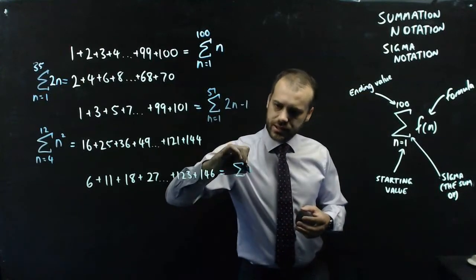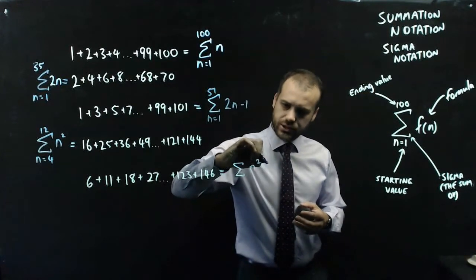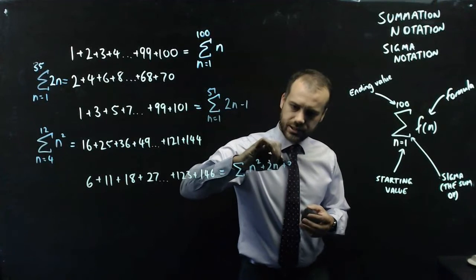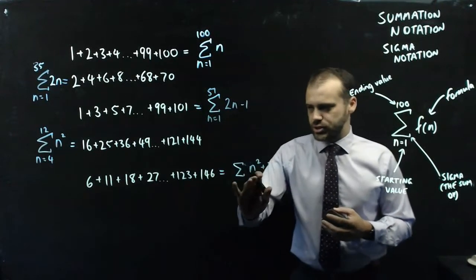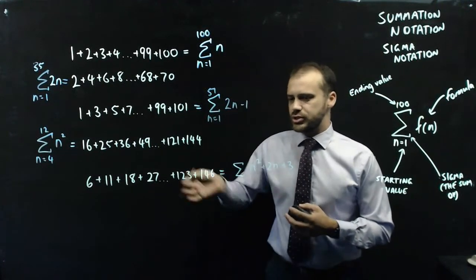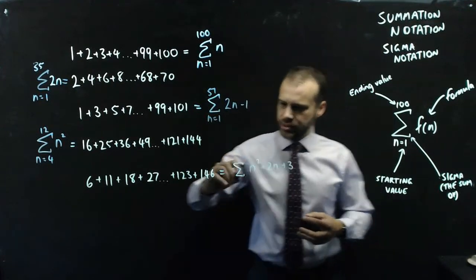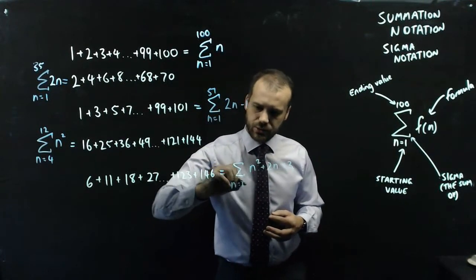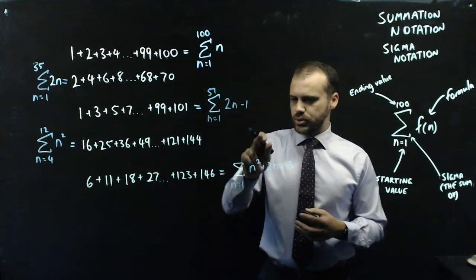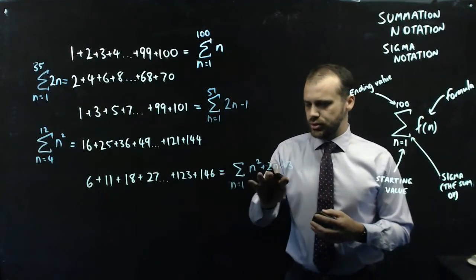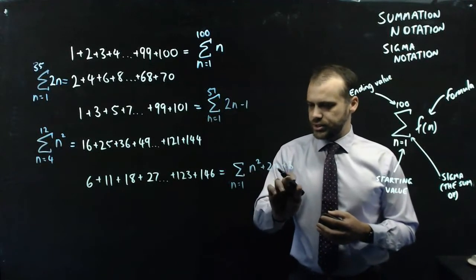This one is n squared plus 2n plus 3. So it's a quadratic and we're putting in integers into the quadratic. Which integers? I believe this one starts at n equals 1. Just let me check.